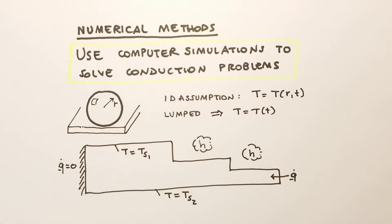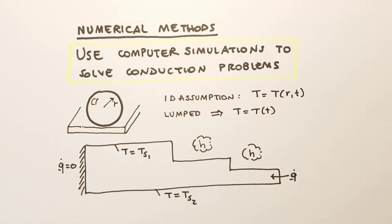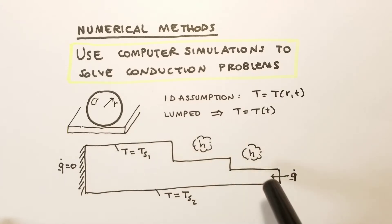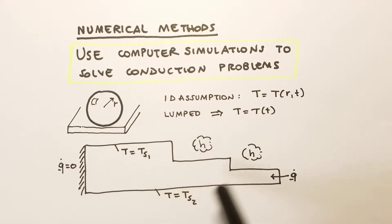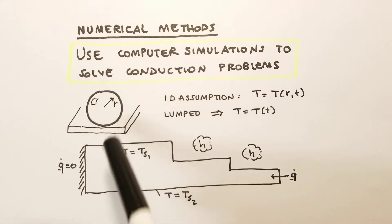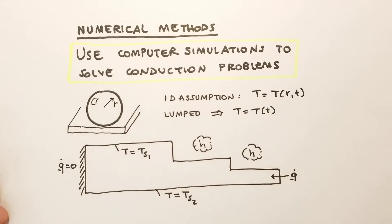These cases were useful because the physics was revealed and we had the closed-form solutions for the temperature. But what if we want to study heat conduction in more complicated systems, for example the one sketched here? Here we have a two-dimensional space, boundaries are irregular, and at each boundary we have a different boundary condition, and we want to find the temperature at each point. For such a case, it would be impossible to find a closed-form solution like we found for a sphere, so we need to rely on computer simulations.